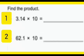Find the product. Question number 1: 3.14 multiplied by 10. The result will be 31.4. Similarly, question number 2: 62.1 multiplied by 10. The product will be 621.